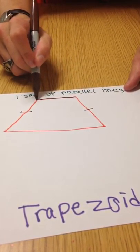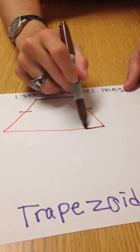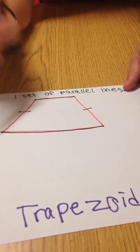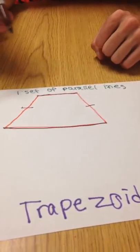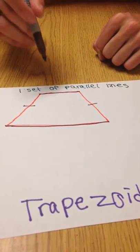So here is one parallel line, and here is the other parallel line. Even though they are different lengths, they are still parallel to one another.